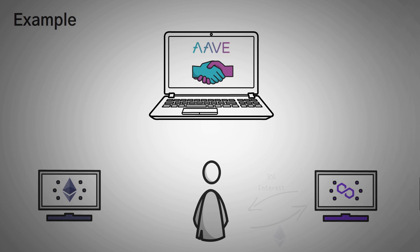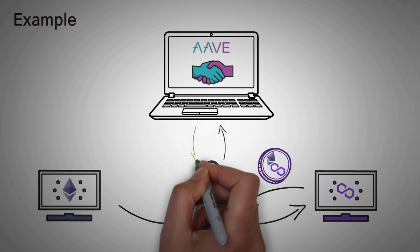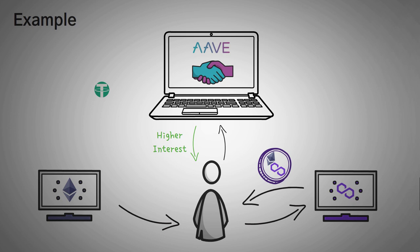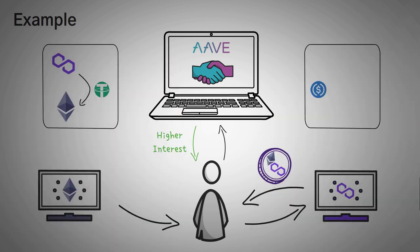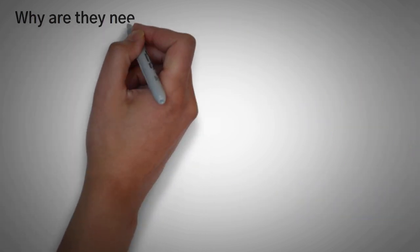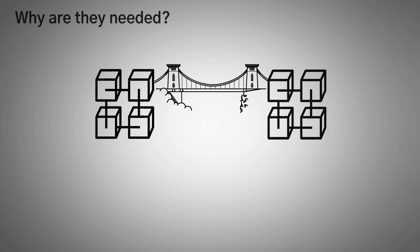So if I take my ethereum on the ethereum network, and I move it over to the polygon network, I can get a polygon representation of the ethereum coin, and then use it on Aave so that I can get higher interest. Or maybe I want to move my tether from polygon to ethereum. Or maybe I want to move my USDC from binance smart chain to polygon. All of these cross-network transfers can be performed through a blockchain bridge. Now you might be wondering, why are these needed?